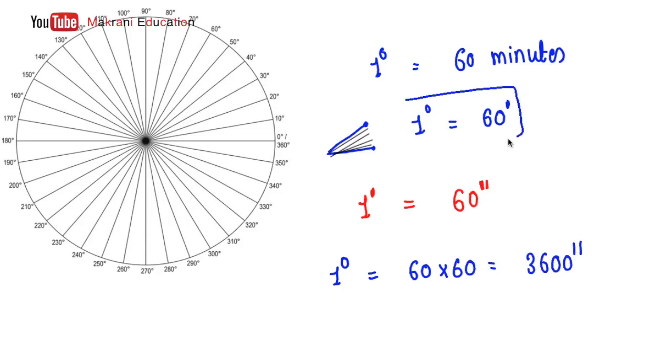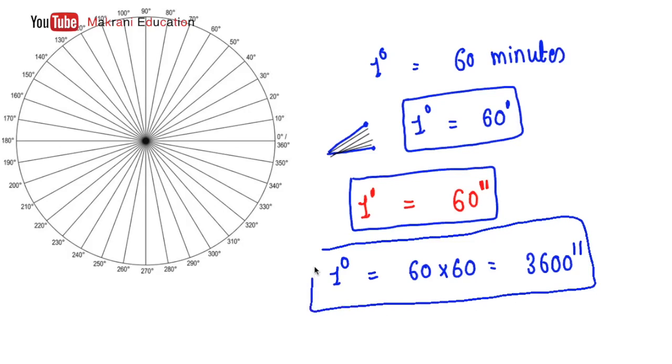So these are three conversions: from degree to minutes, minutes to seconds, and degree to seconds. Hope the concepts are clear. For any questions, you can leave them in the comments below. Thank you.